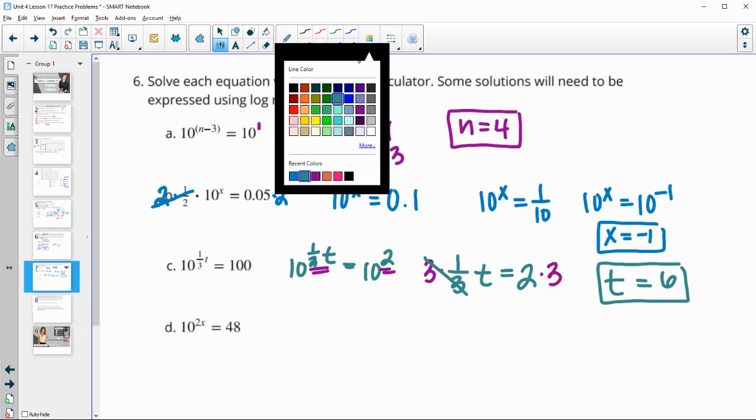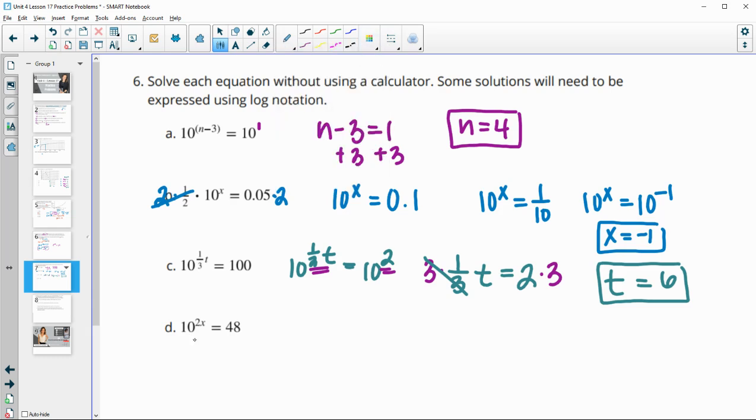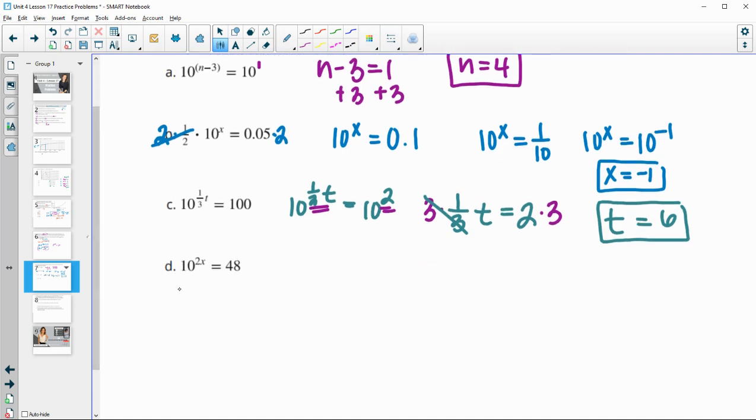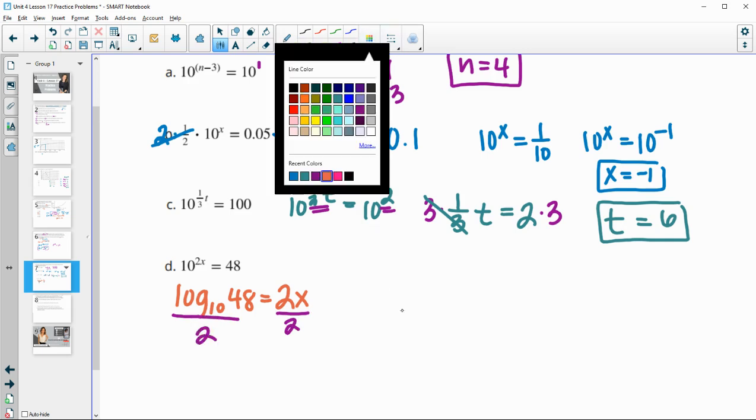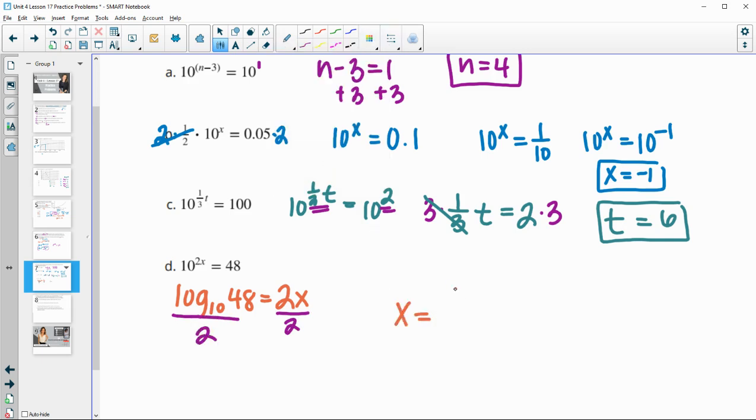Part D. So this one, 48 cannot be written as a base 10. So this one we're going to need to do logarithms. So if we do log base 10 of 48, that will give us back this exponent of 2x. So then we would just need to divide both sides by 2 to get x by itself. So x is going to equal whatever log base 10 of 48 divided by 2 is.